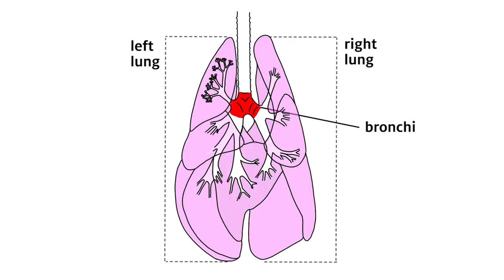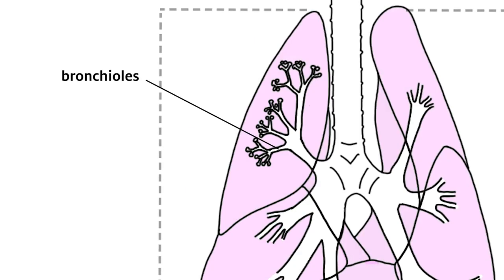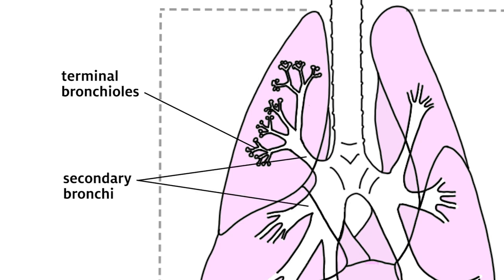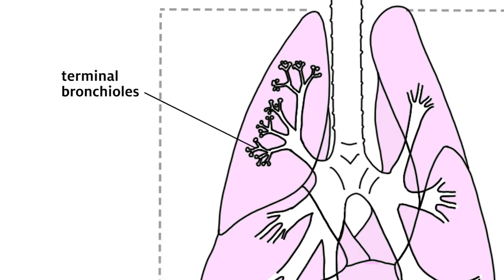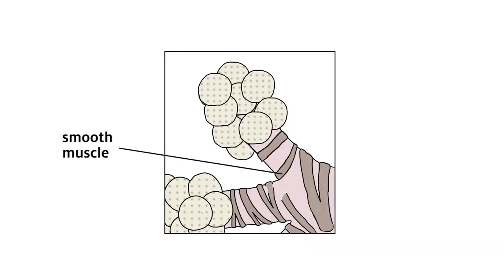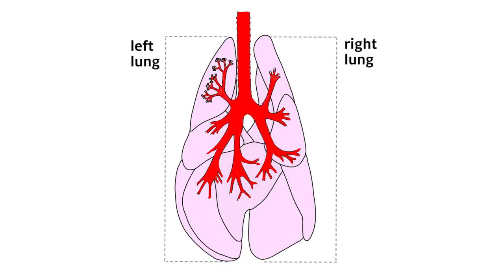The primary bronchi, or main bronchi, continue down into the lungs and become more and more narrow as they branch. As they branch, they are termed secondary bronchi, then tertiary bronchi, then bronchioles, and finally the terminal bronchioles. The secondary bronchi are also referred to as lobar bronchi, as there is one for each lung lobe. At the level of the terminal bronchioles, there is no longer cartilage in the walls of the airway and they are surrounded solely by smooth muscle. The airways from the trachea to the terminal bronchioles are referred to as the lower airways.